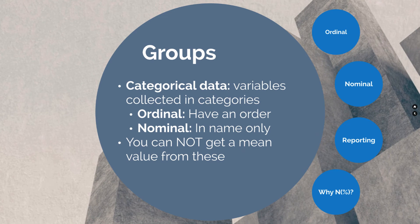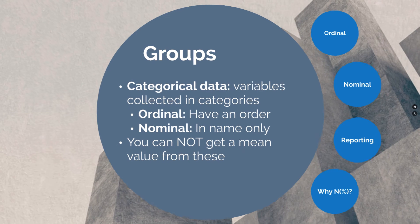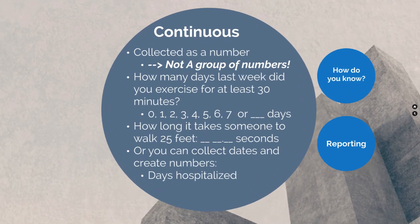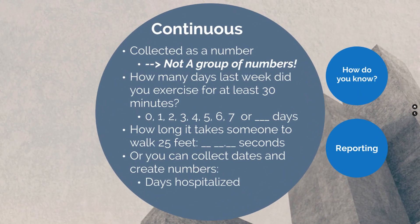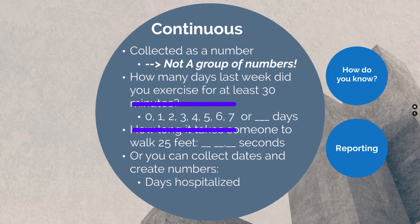Categorical variables collected in groups often cannot be made into numerical continuous responses, which are collected as a number, not a group of numbers. Consider the question 'How many days a week did you exercise for at least 30 minutes?' — there are eight possible responses: zero through seven. You could have participants check individual boxes for each day or simply write in the number of days. Either way, this is a continuous numeric response.